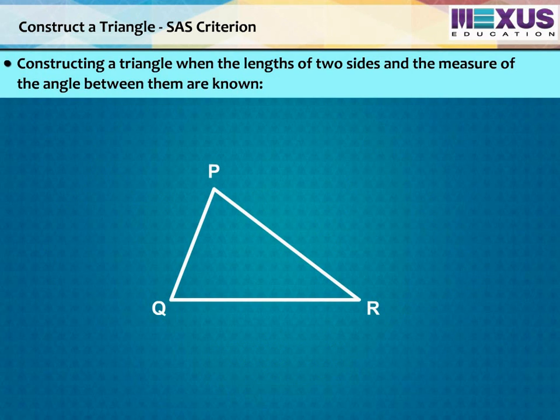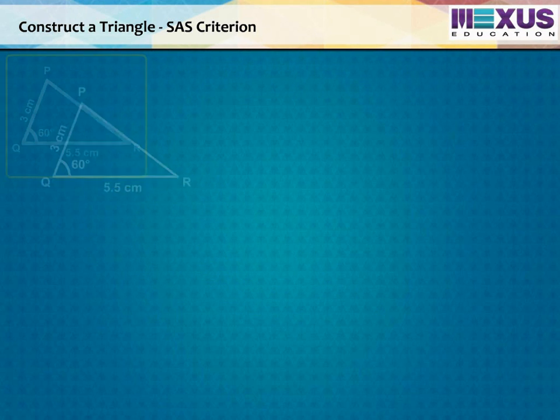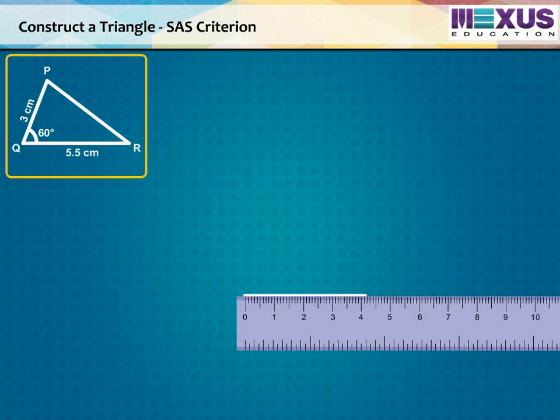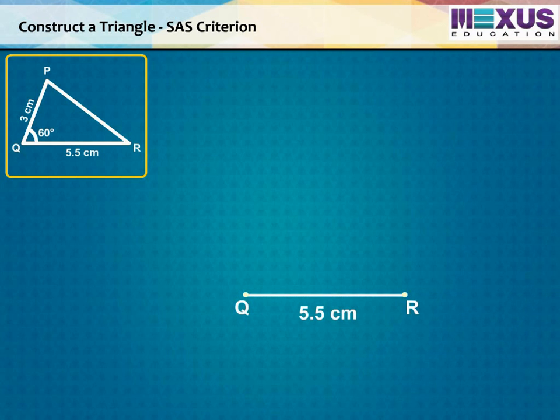To construct triangle PQR, whose measure of its two sides are given as PQ is equal to 3 cm and QR is equal to 5.5 cm and the included angle PQR equal to 60 degree, let's first draw its rough sketch. Start by drawing a line segment QR equal to 5.5 cm.